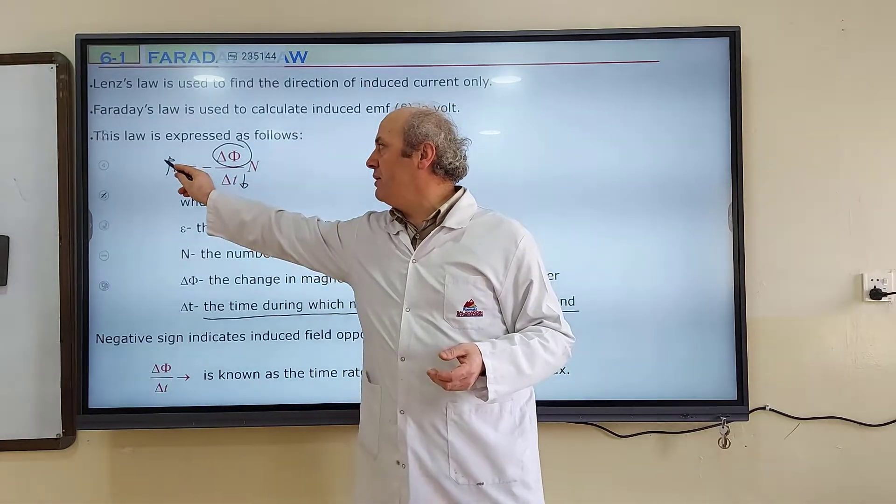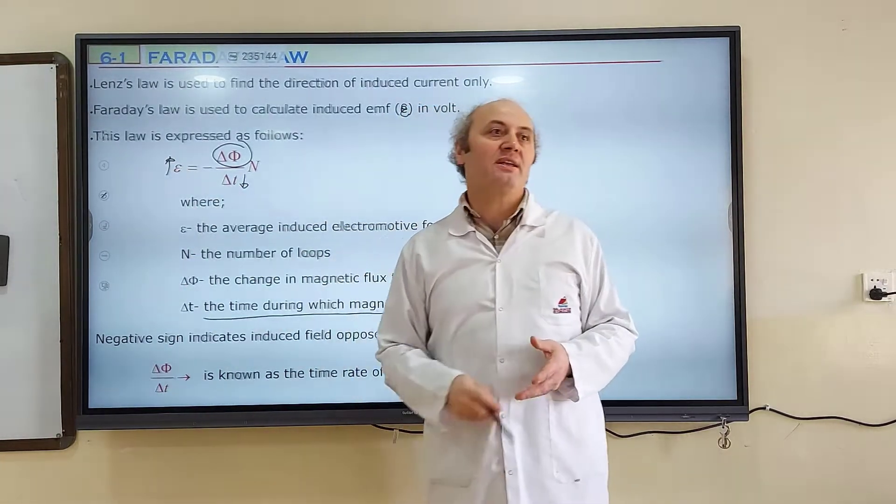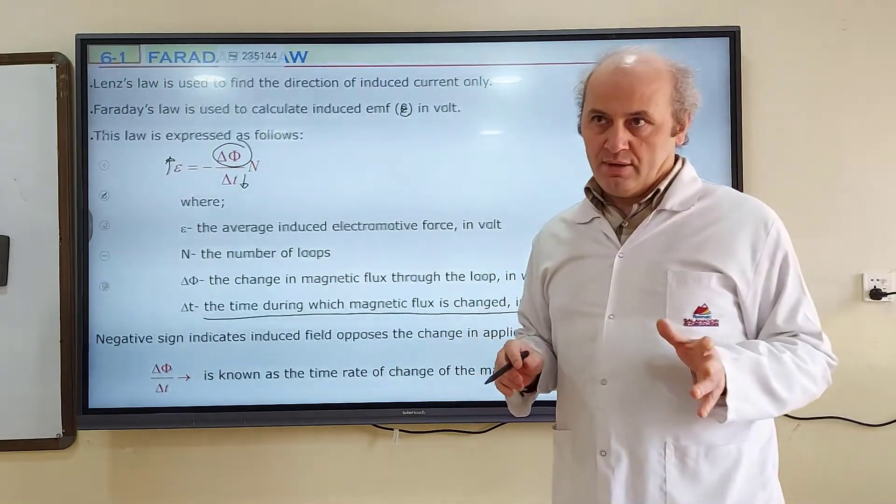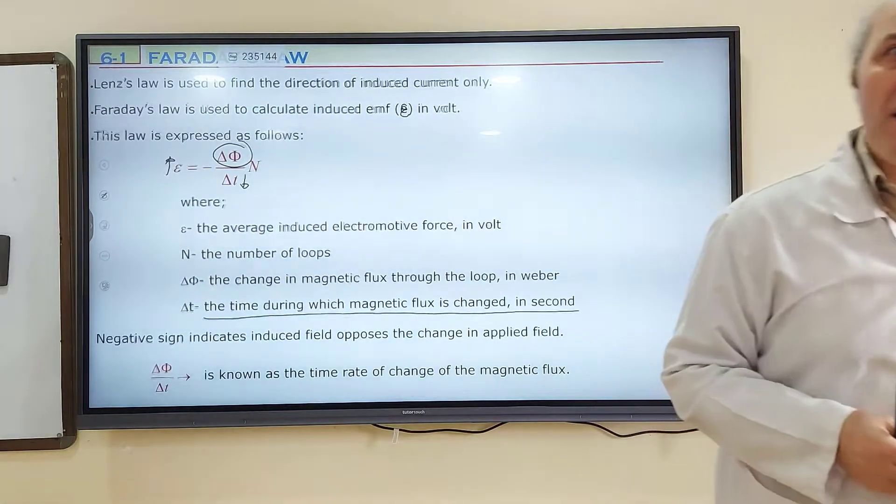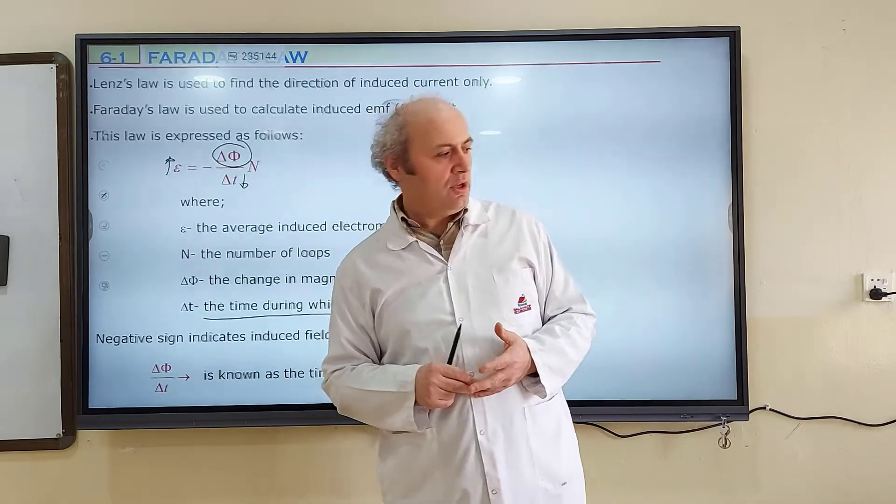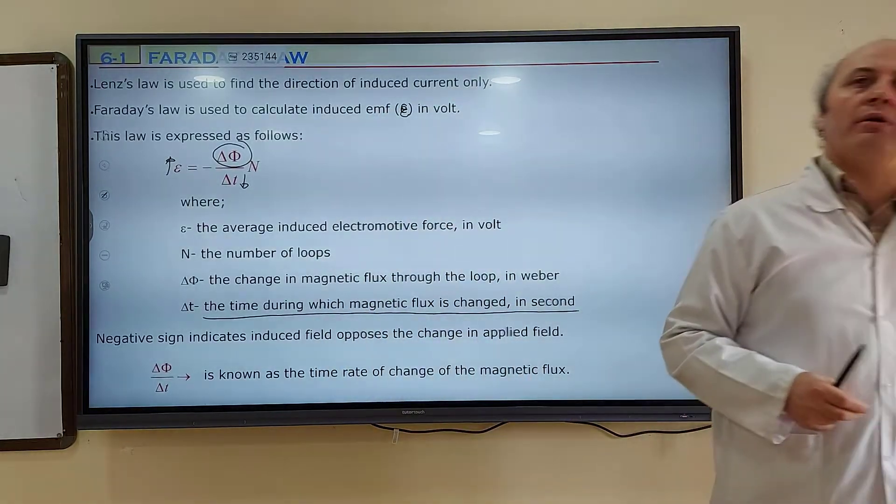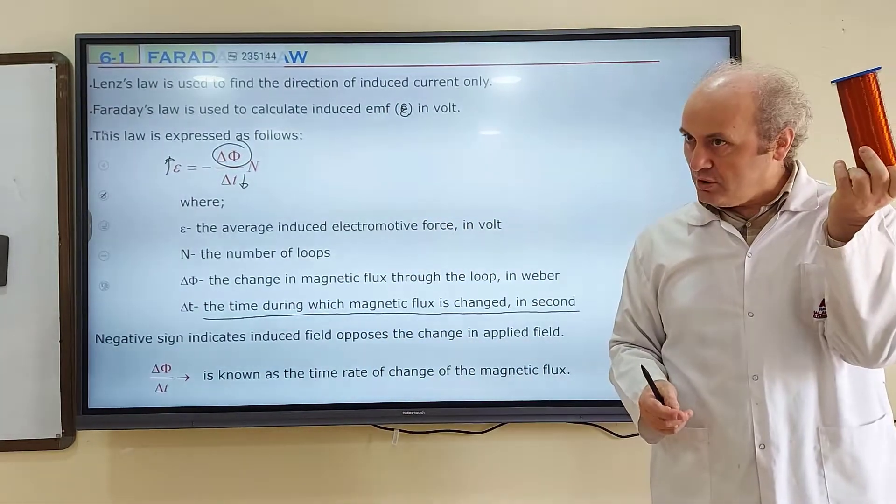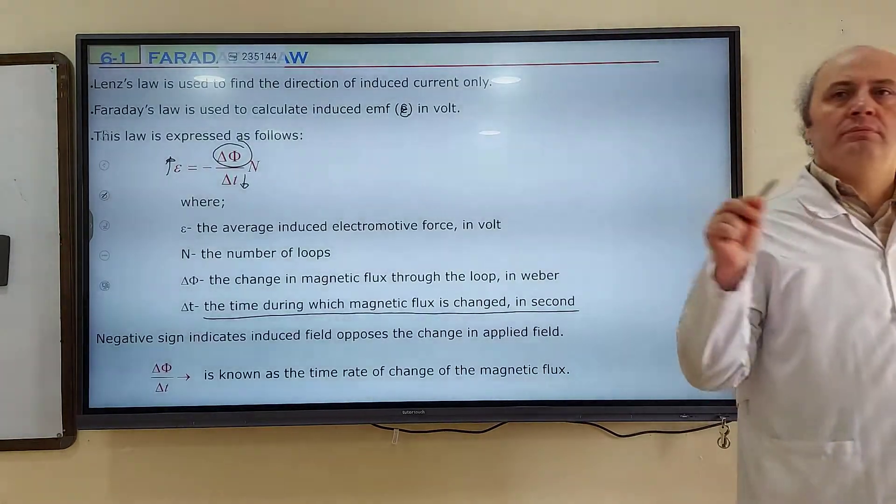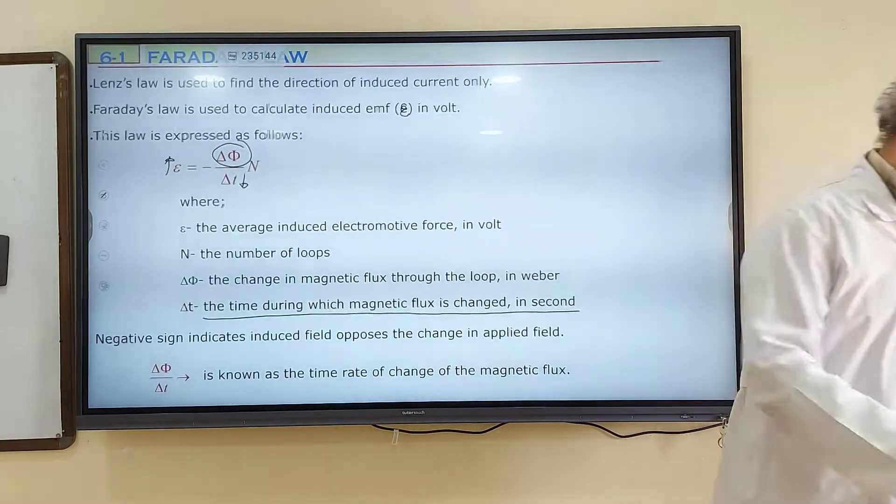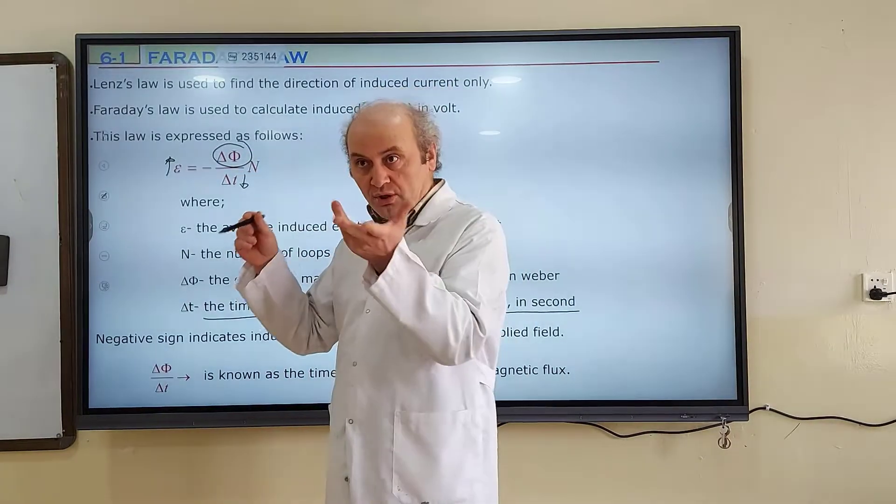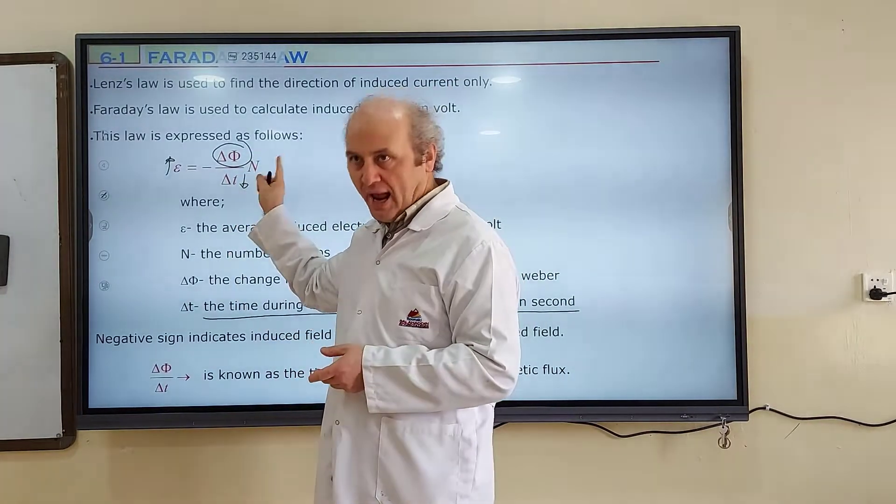Because faster, quicker change means smaller delta t, and smaller delta t causes a greater EMF, delta t is going to be in the denominator. Delta phi over delta t. If there are more than one loops, we will multiply delta phi over delta t by n, the number of turns or number of loops. In this coil, because there are several loops, we can measure a greater induced EMF.